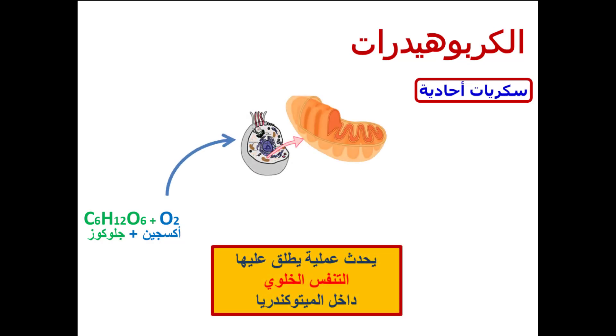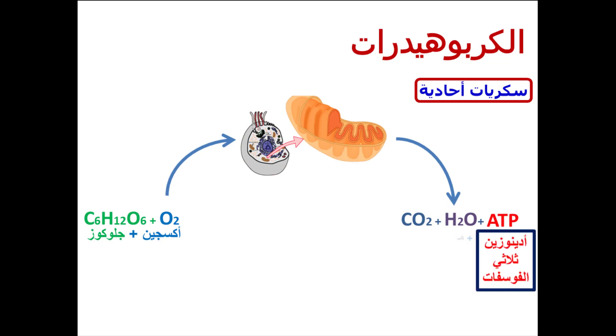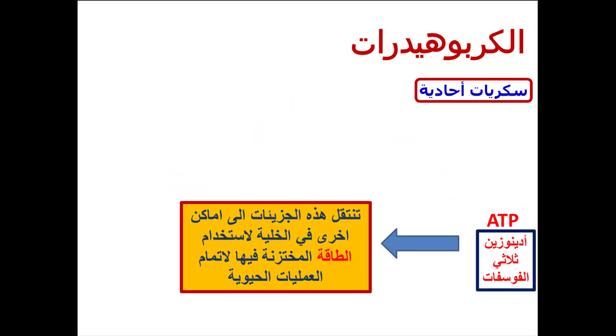دور السكريات الأحادية في إنتاج الطاقة: السكريات الأحادية يتم أكسدتها في الميتوكوندريا حيث تنطلق الطاقة وتتكون ثاني أكسيد الكربون وماء، وتُخزن الطاقة في مركب يسمى ATP (أدينوسين ثلاثي الفوسفات). جزيئات ATP تنتقل إلى أماكن مختلفة في الخلية لاستخدام الطاقة المختزنة فيها في إتمام العمليات الحيوية.